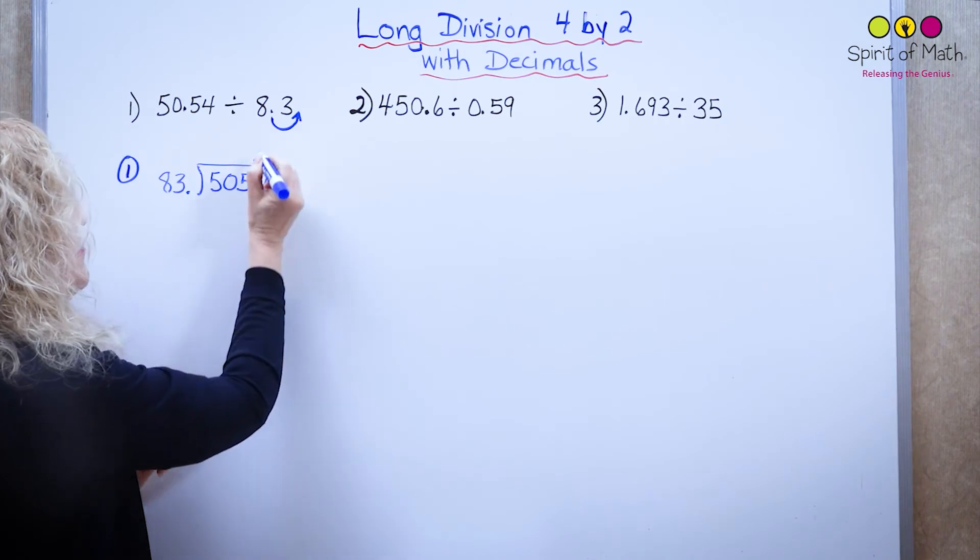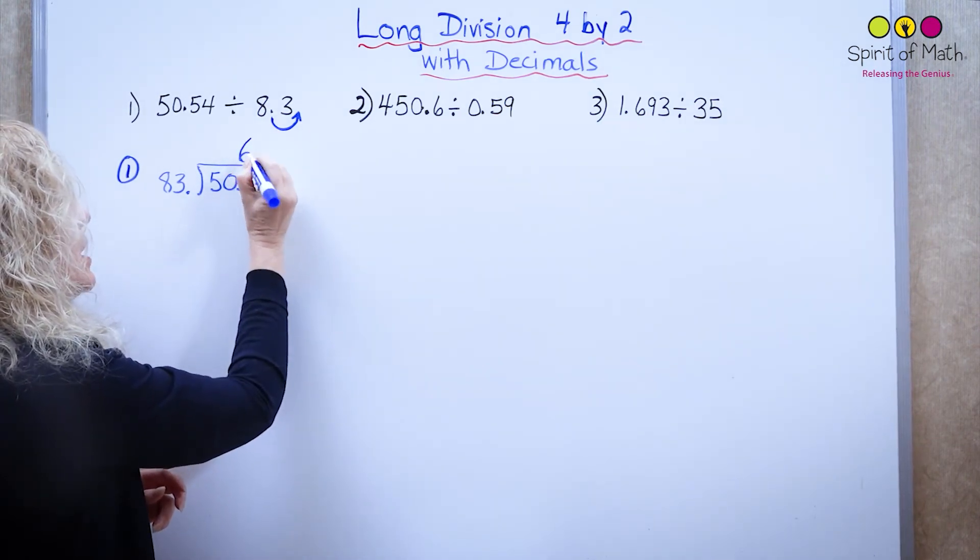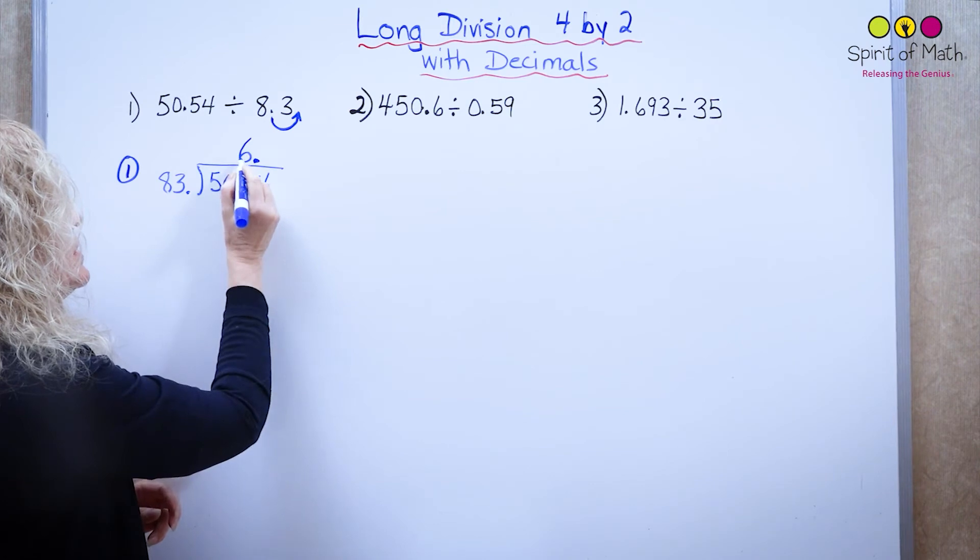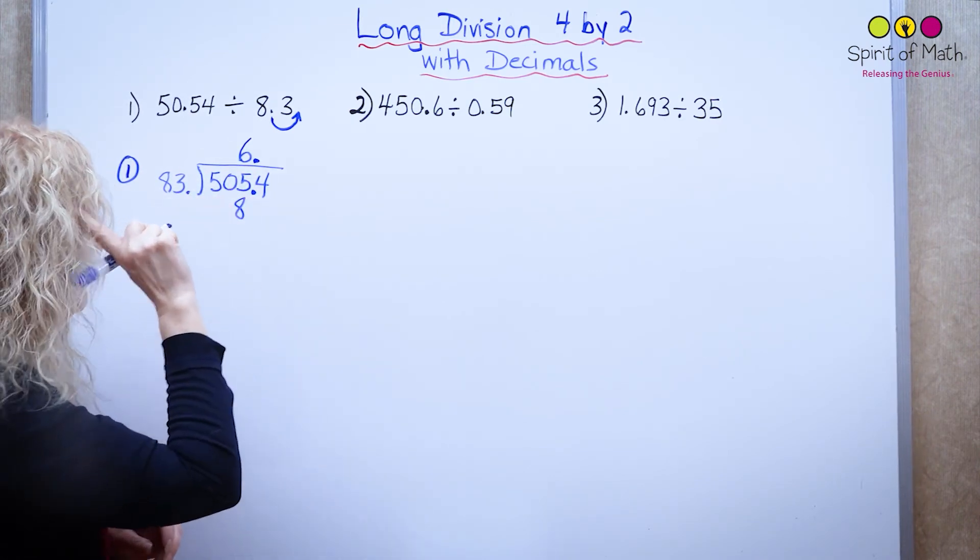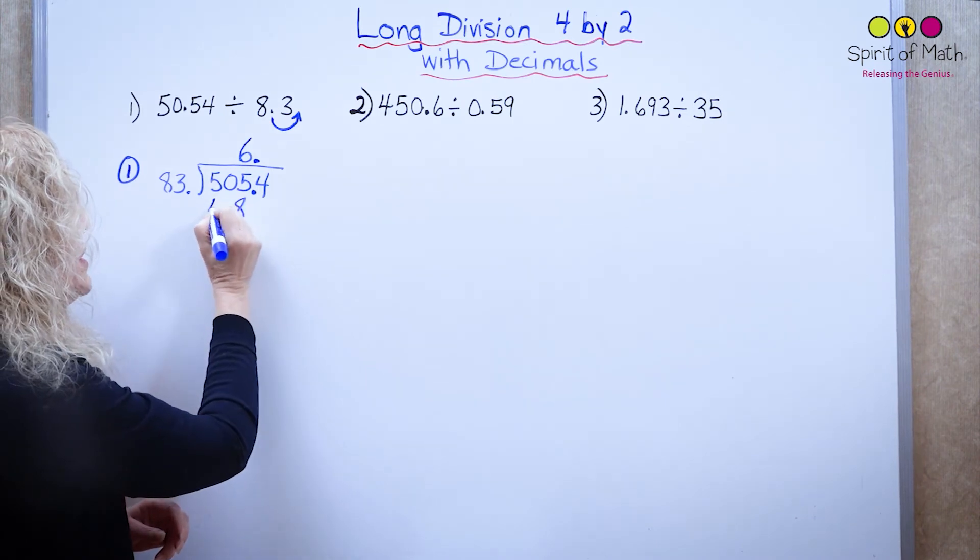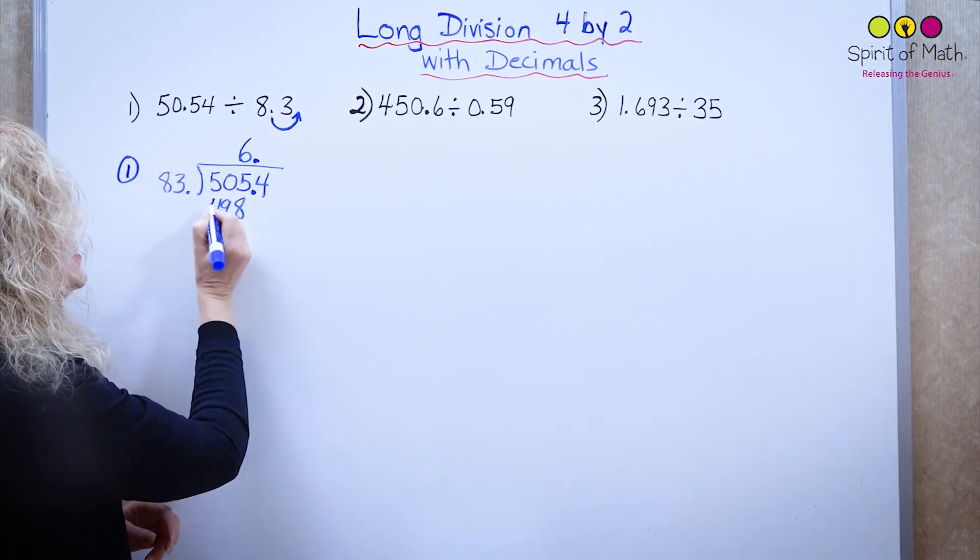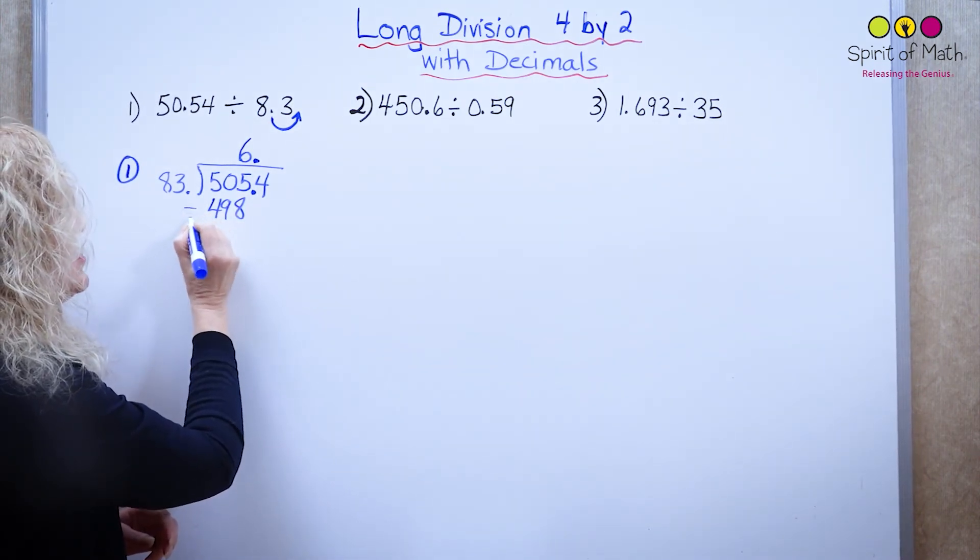Now 83 into 505. So that would go 6 times. 6 times 83: 6 times 3 is 18, carry the 1. 6 times 8 plus 1 is 49. So then I will subtract that.